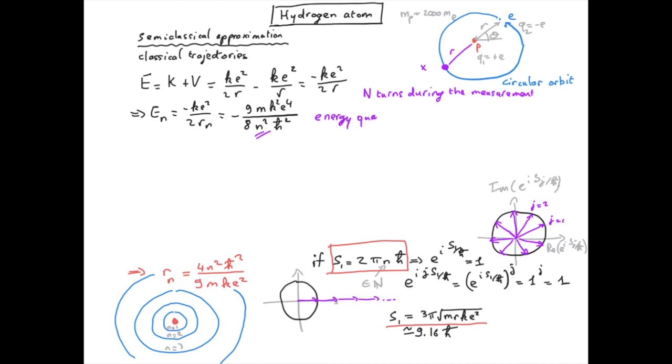Now of course we only solved the problem approximately because we used the semi-classical approximation. It turns out that if we were solving the problem for the hydrogen atom using exact quantum mechanics we will get similar quantization for the radius and the energy. The only difference will be in the numerical factor.